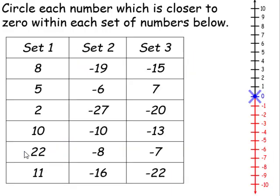On this particular one, they want us to circle each number which is closer to 0 within each set of numbers below. When we take a look at the first set, we're trying to see which number is closer to 0. We should notice that it should be 2. 5 would be further away from 0, as well as 8, and then 10. 11 won't even make it on this number line, and the furthest one would be 22. So the closest one in the first set is the number 2.